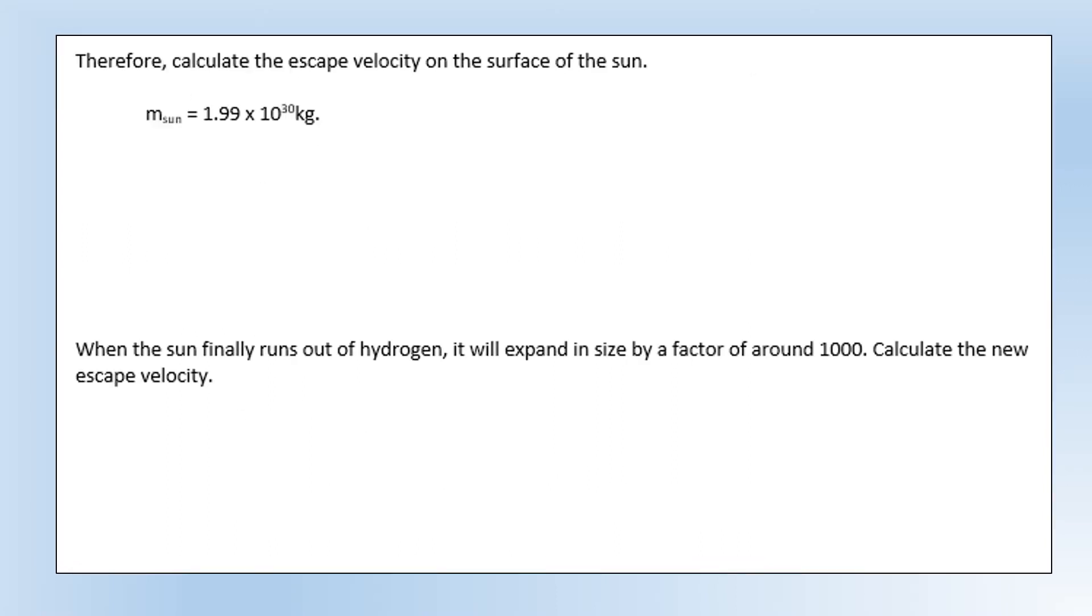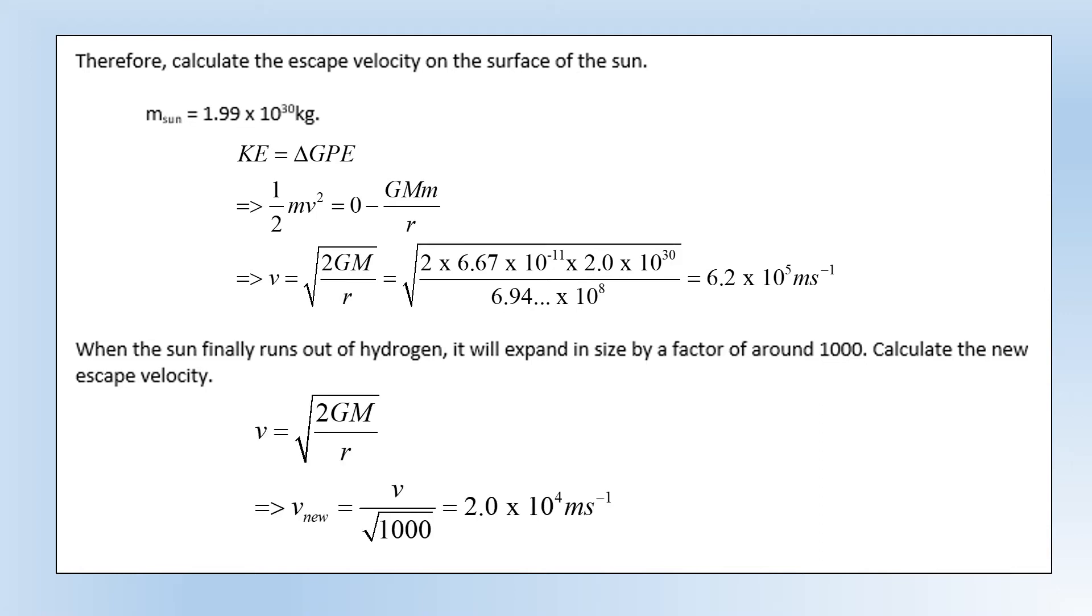Okay, so therefore calculate escape velocity on the surface of the sun and we've been given what the mass of the sun is. So escape velocity essentially tells us the amount of kinetic energy we'd need to escape from the gravitational potential field or increase the gravitational potential energy to zero. So that's what we're going to do. We're going to equate the kinetic energy to change in gravitational potential. It's going to finish with zero gravitational potential, start with GMm over r. Now we can plug our value of mass in and the r we've just calculated, giving us an escape velocity of 6.2 times 10 to the 5. When the sun finally runs out of hydrogen it will expand in size by a factor of about a thousand. Calculate the new escape velocity. So we could go and do all that calculation again, or what we can do is figure out using this equation, if we multiply r by a thousand, essentially that's going to mean the velocity gets divided by root one thousand, which gives us 2 times 10 to the 4 meters per second.